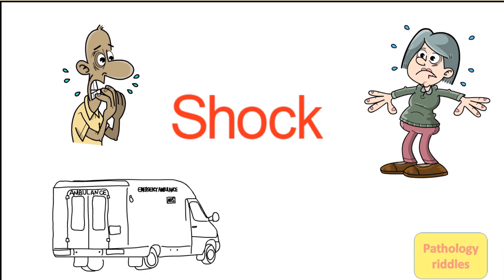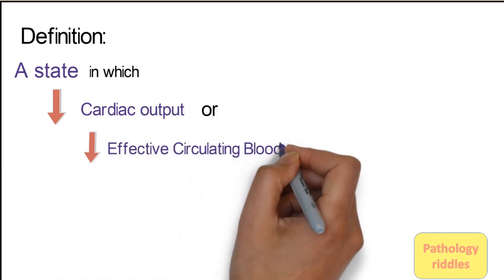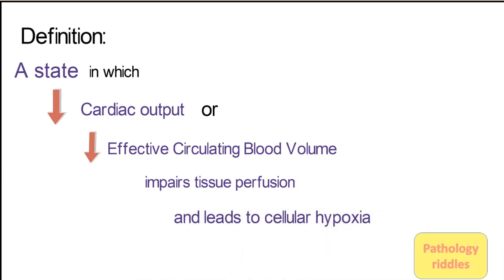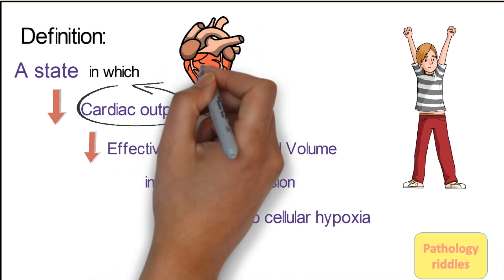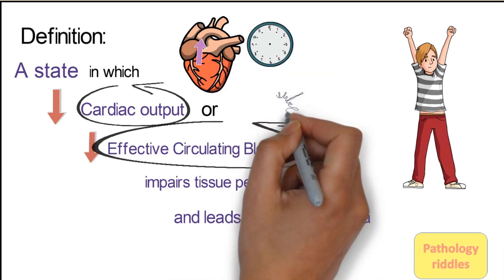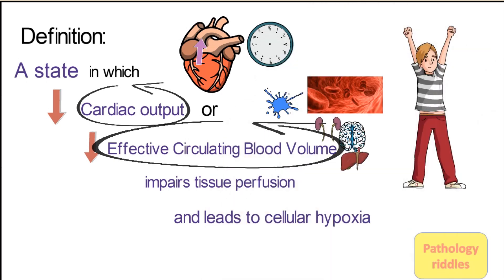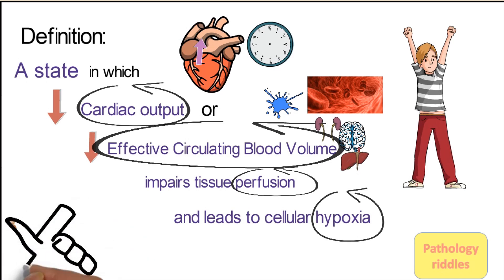Let's start with the definition of shock. It is a state in which decreased cardiac output or decreased effective circulating blood volume impairs tissue perfusion and leads to cellular hypoxia. Cardiac output is the quantity of blood pumped into the aorta each minute by the heart. Effective circulating blood volume refers to extracellular fluid within the vascular spaces that is effectively perfusing all the tissues. In simple words, shock is a state where body tissues are getting less blood supply and oxygen due to decreased circulating blood. Write the longer definition displayed on the screen for exams.